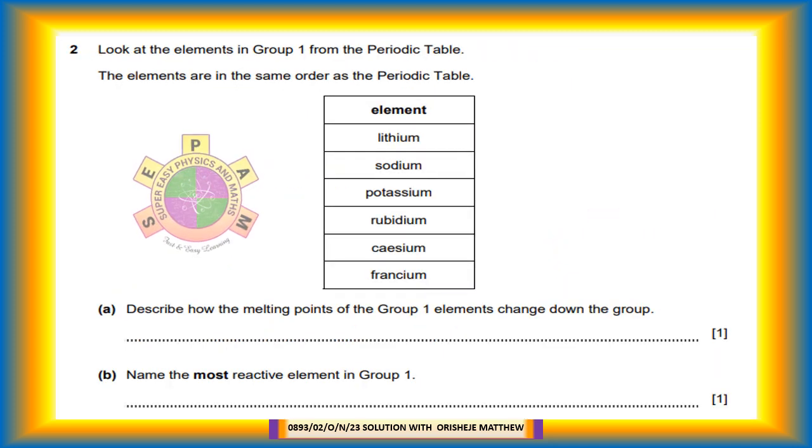Question 2. Look at the elements in group 1 from the periodic table. The elements are in the same order as the periodic table. The elements given down group 1 are lithium, sodium, potassium, rubidium, cesium, and francium.